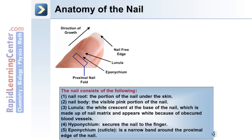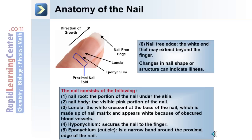The anatomy of the nail. The nail consists of the following: a nail root, which is the portion of the nail under the skin; the nail body, which is the visible pink portion of the nail; the lunula, which is the white crescent at the base of the nail, made up of nail matrix, and appears white because of the obscured blood vessels; the hyponychium, which secures the nail to the finger itself; and the eponychium, which is a cuticle — a narrow band around the proximal edge of the nail. The nail-free edge is the white end that may extend beyond the finger. Changes in nail shape or structure can indicate illness.